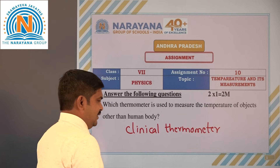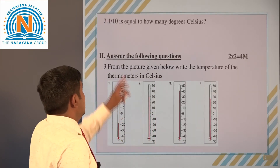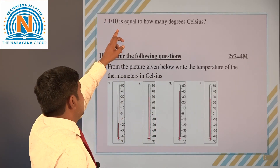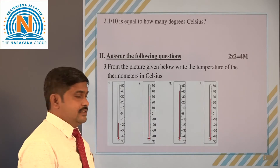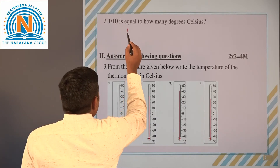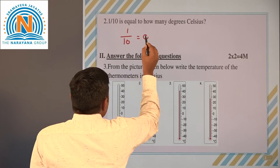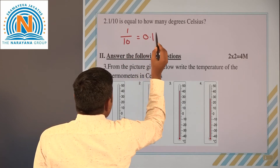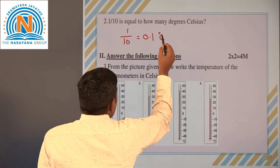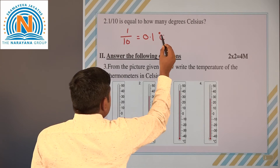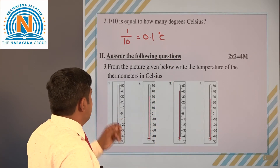The next question: 1/10 is equal to how many degrees Celsius? Here we can see that 1/10 equals 0.1 degree Celsius. That is the equivalent.